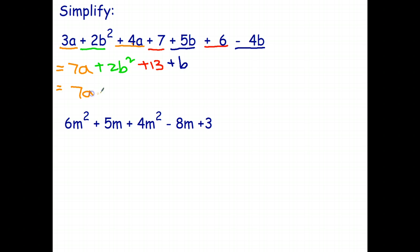And I'll write all of that nicely in a single color. So 7a plus 2b squared. I think I'll write the plus b next. We like to write the letters before the constant terms and then plus 13 on the end. And that's the first one simplified.